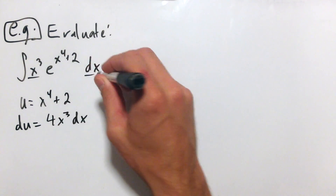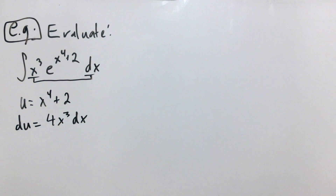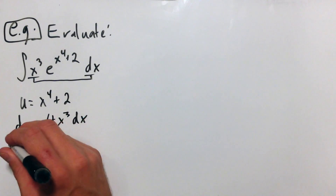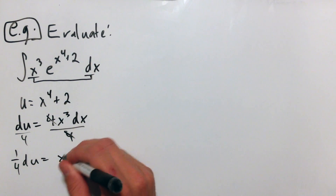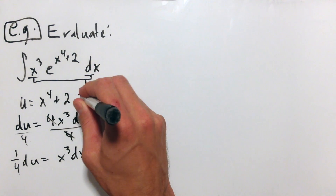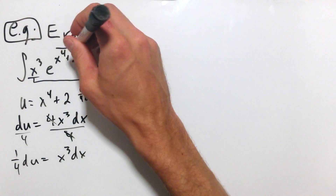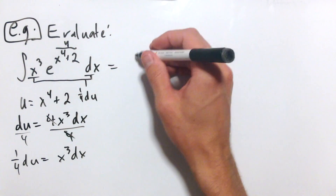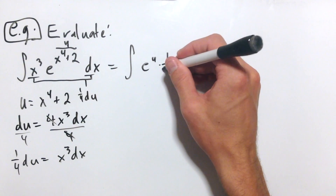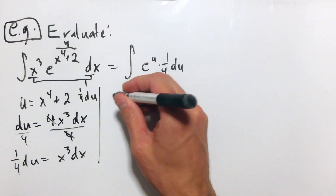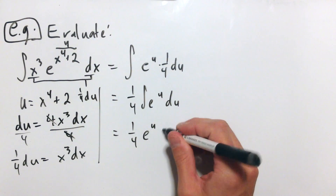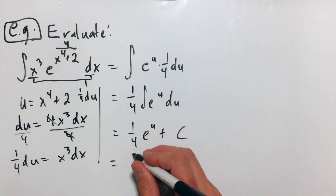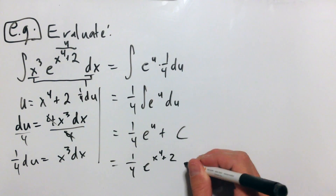Now, I don't have four x cubed dx — I just have x cubed dx. Is that a huge issue? No. I can divide both sides by four, leaving me with one quarter du equal to x cubed dx. So x cubed dx is one quarter du, and x to the fourth plus two is u. This becomes e to the u times one quarter du. Pulling out the one quarter, I'm just integrating e to the u du. The antiderivative of e to the u is itself, so I get one quarter e to the u plus c, which equals one quarter e to the x to the fourth plus two plus c.